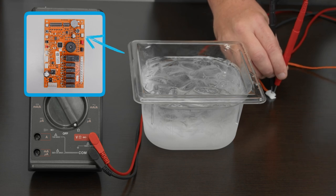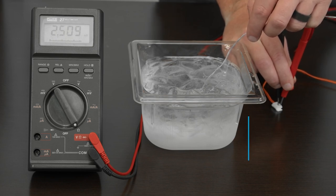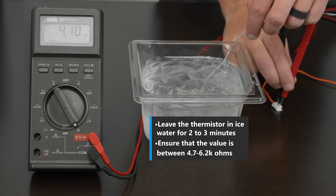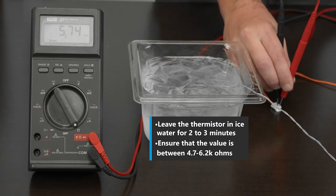First, disconnect the thermistor from the K3 terminal located on the control board. Next, place the thermistor in a glass of ice water for two to three minutes. A thermistor will read 4.7 to 6.2 K ohms.